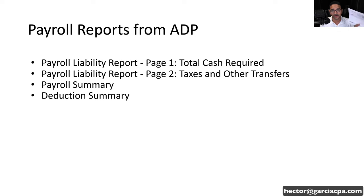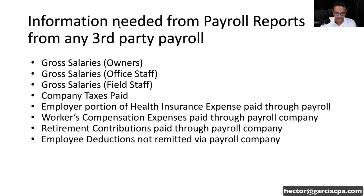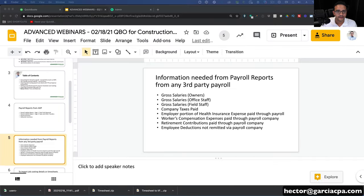If you download the documents we have in there, the ones I have printed, and I'm also going to put them on the screen: I have a payroll liability report called Total Cash Required, a payroll liability report that contains taxes, a payroll summary report that contains all the employees' pay, hours, and their net checks. And then on the fourth page, I have a deductions summary. We also have it recorded here in the webinar so we know exactly what we're looking at.